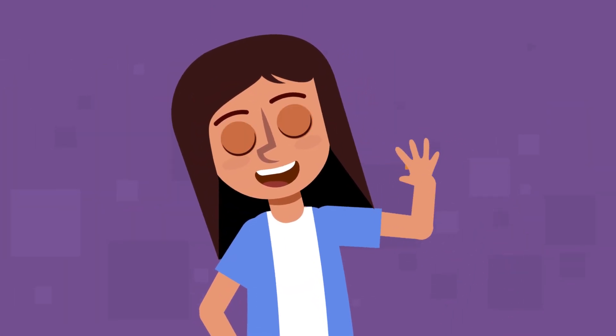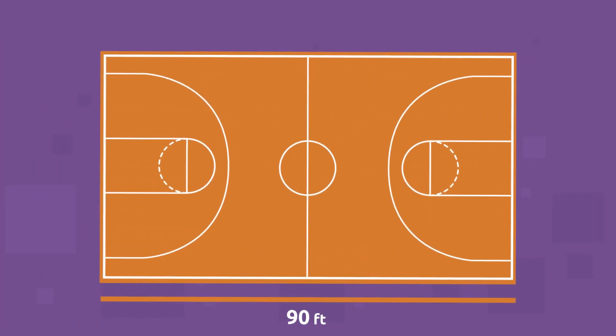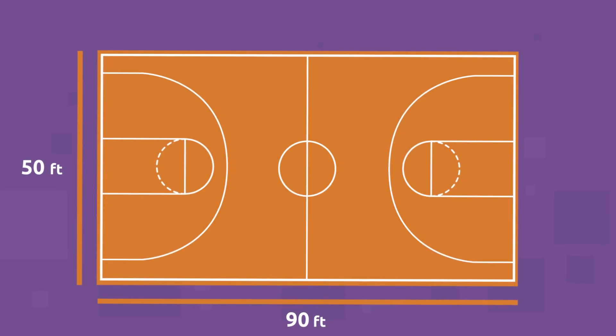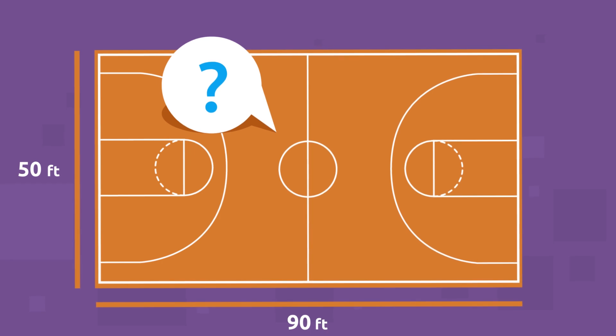The school principal wants to build a basketball court in the playground. The court has a length of 90 feet and a width of 50 feet. What is the area that she will need to build the basketball court? To find out,